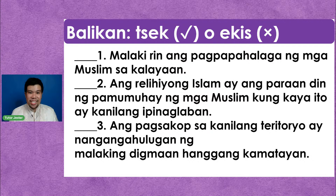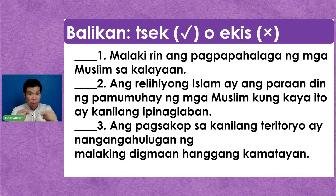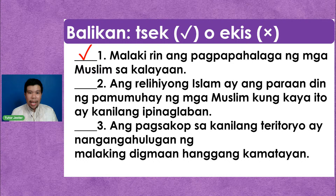Ano ang inyong mga kasagutan online learners at televiewers? Ang kasagutan sa number one ay check — ganon din ang kasagutan nina Jane, Erica Galang, Mark, Anthony, Alan, Jess Rill, at Shinky Avril. Pare-parehas ang kasagutan, kahuhusay talaga. I-reveal na natin ang kasagutan — check ang ating sagot sa unang bilang. Para sa ikalawa, ang Relayong Islam ay ang paraan din ng pamumuhay ng mga Muslim kaya ito ay kanilang ipinaglaban. Ang kasagutan nina Alexis, Jane, Jess Rill, Kevin, Neil, Carlo, Christine, Jericho, Chris, at James — ay check. Tumpak na tumpak. Kahuhusay talaga.